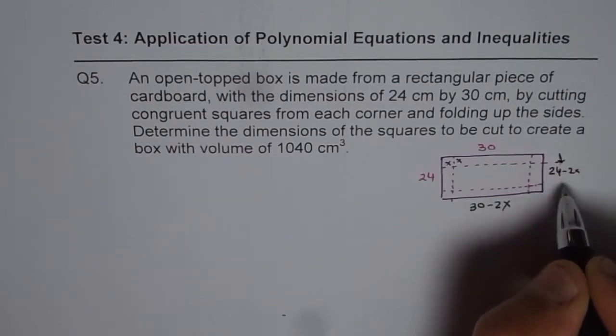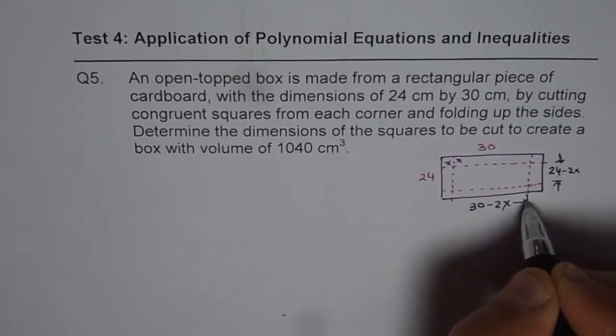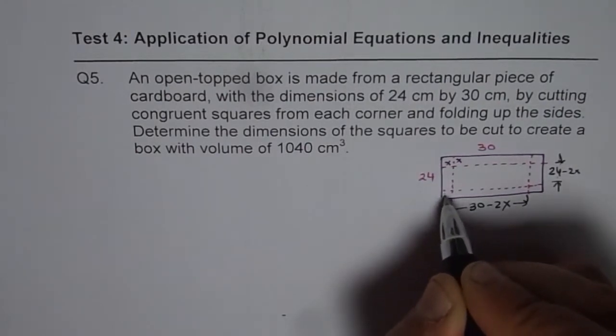So, x from here and x from here and x from here and the width will be 24 minus 2x. So, that is going to be the dimension for our box, correct?